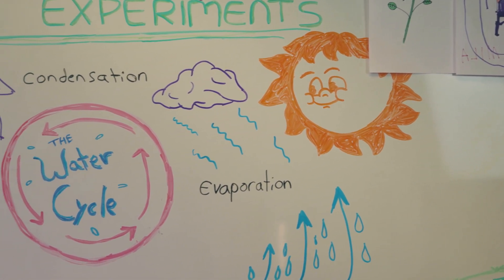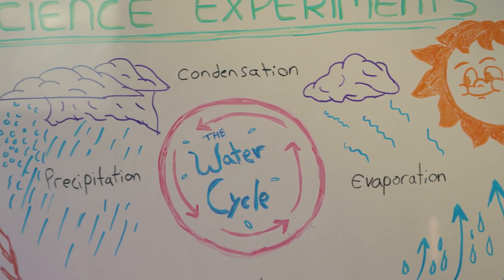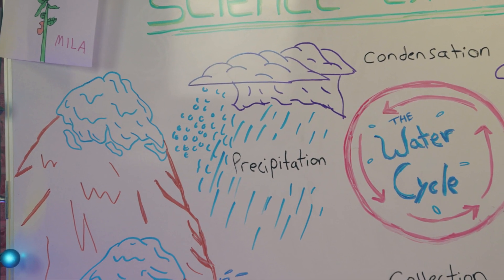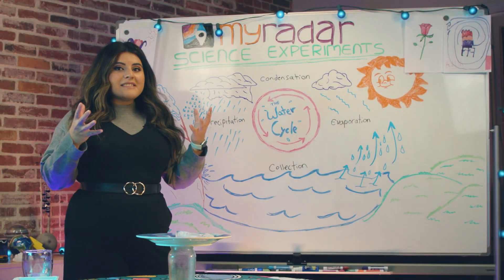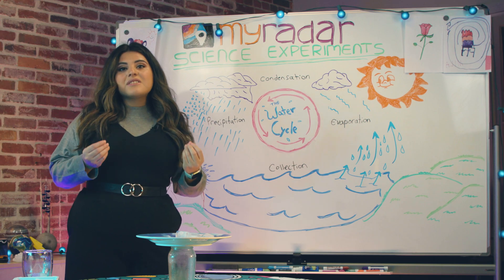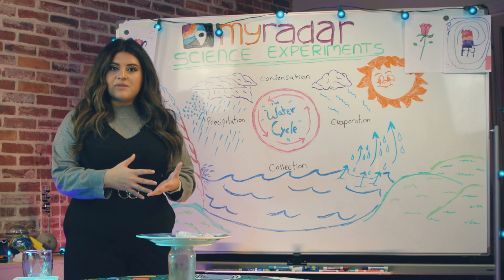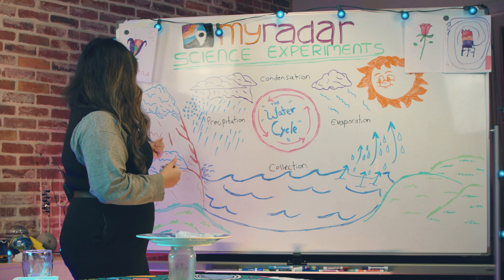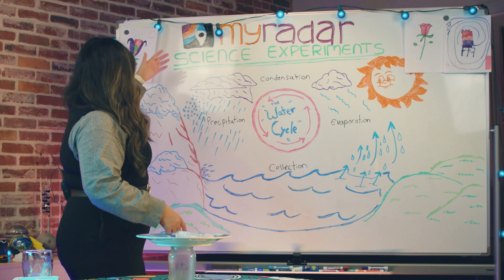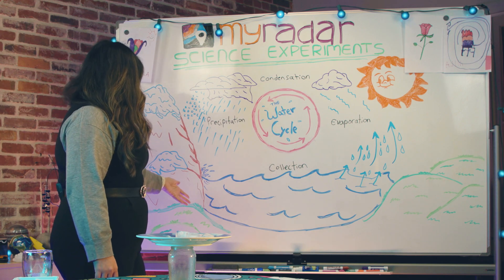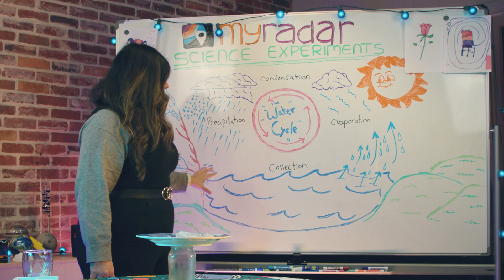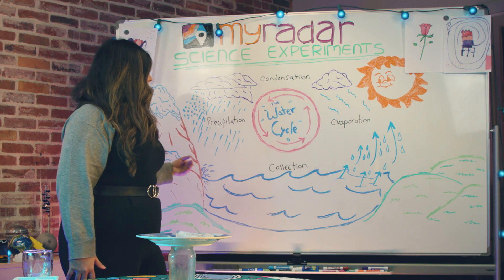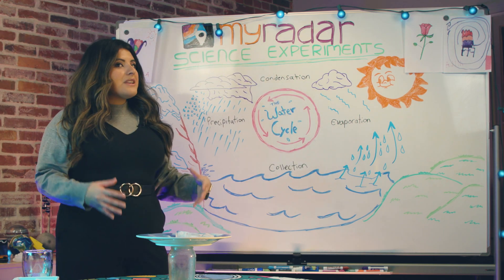And then condensation — this could be in the form of clouds, just like we saw in the glass jar. Once the cloud gets heavy, you're going to start to get those water droplets, so that's the rain, the precipitation in the form of rain or even snow. And eventually it falls right back down into our water, which could be the ocean. Then we repeat the cycle again and again — and this is how we get rain.